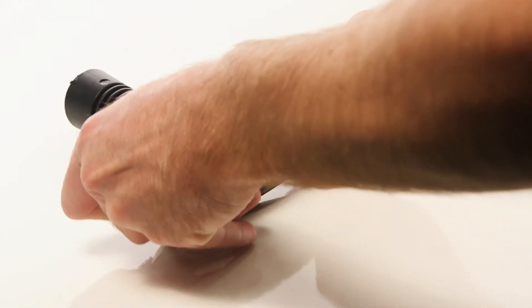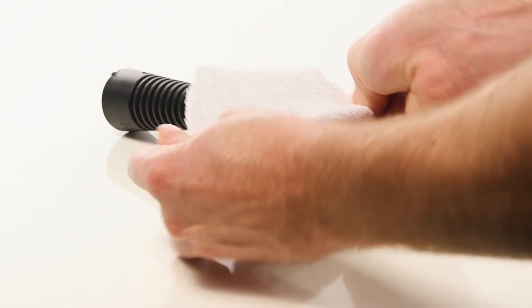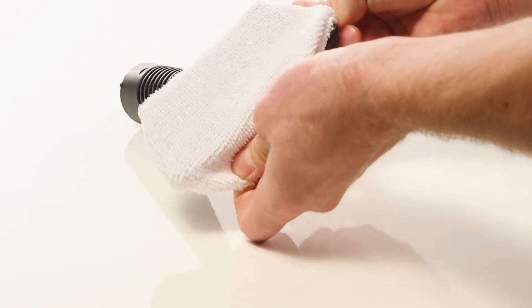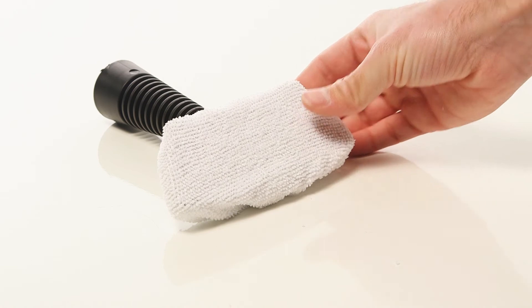The upholstery tool fits onto the end of the utility nozzle. Ensure the cloth is attached to the upholstery tool before using.